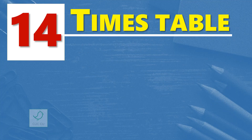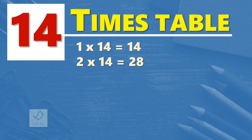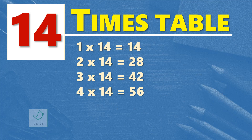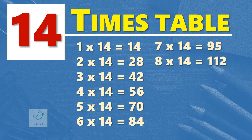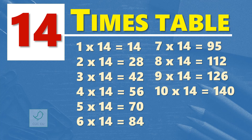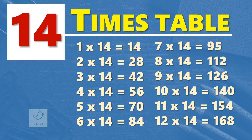14 times table: 1 time 14 is 14, 2 times 14 are 28, 3 times 14 are 42, 4 times 14 are 56, 5 times 14 are 70, 6 times 14 are 84, 7 times 14 are 98, 8 times 14 are 112, 9 times 14 are 126, 10 times 14 are 140, 11 times 14 are 154, 12 times 14 are 168. One more time.